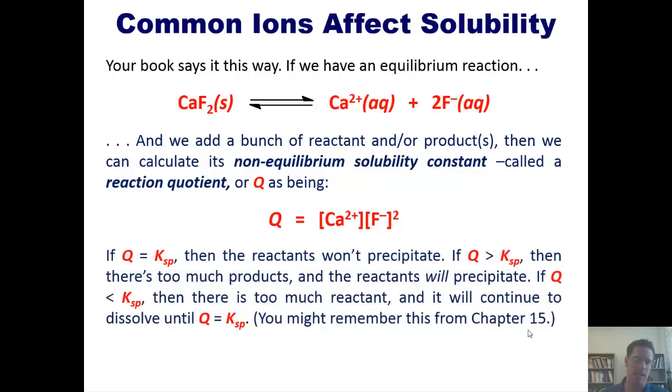So if Q happens to equal KSP, then your reactants won't precipitate because you're right at that magic sweet spot. If Q is larger than KSP, then there are too many products and the equilibrium will drift to the left, which means that you will see your reactant precipitate out.